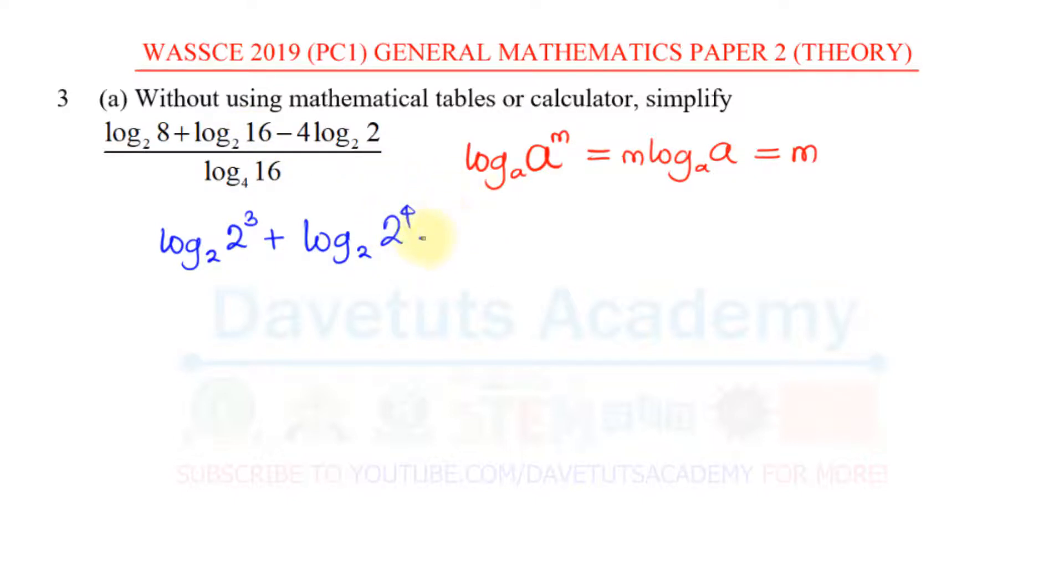Then minus 4 log to base 2 of 2. We have all of these being divided by log to base 4 of 16. And 16 itself is 4 raised to power 2.